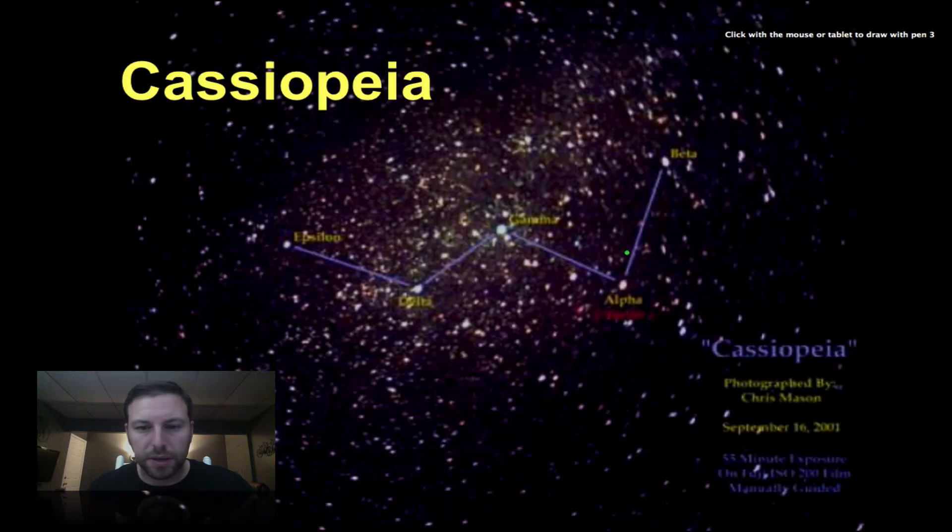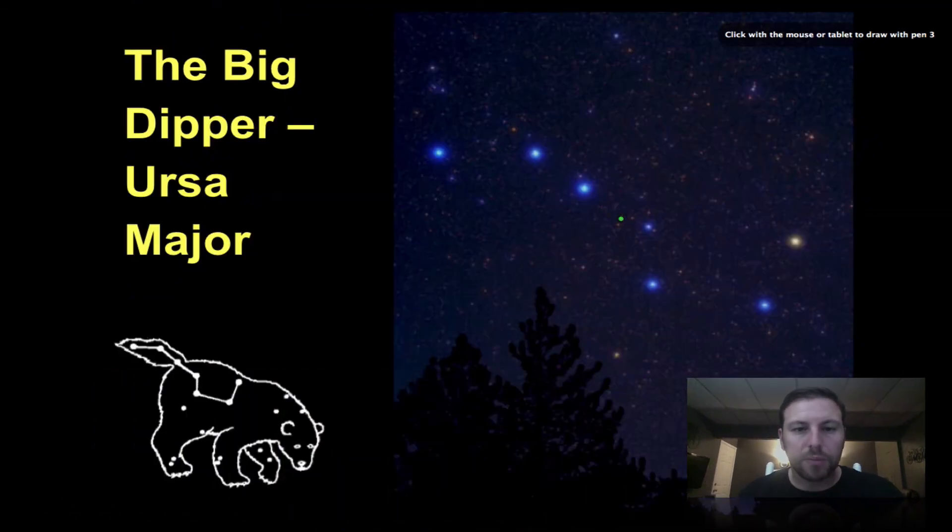Okay Cassiopeia the W shape. And the Big Dipper. So it starts over here making its way down and over.